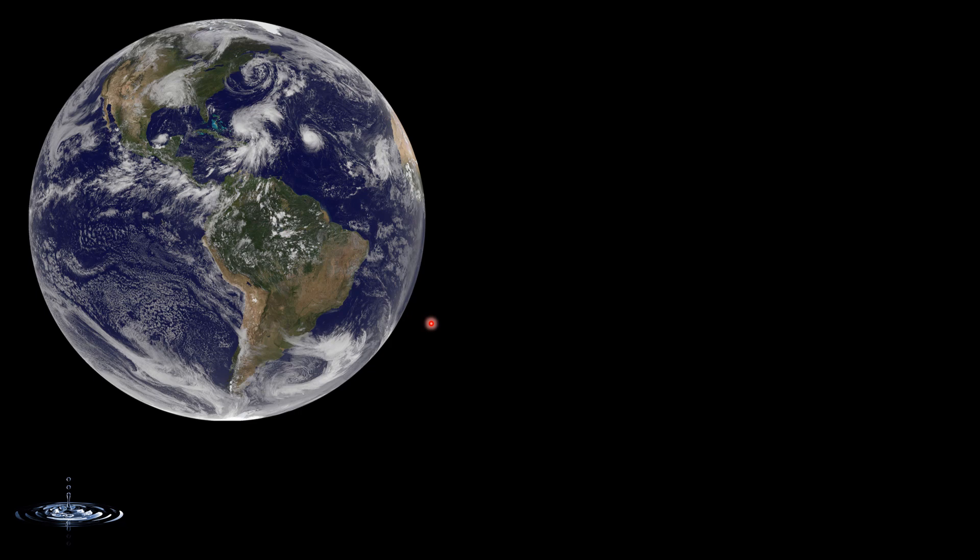It is true that the surface is mostly covered with water. Actually, 71% of the surface is covered with water, and this gives us a false impression that Earth is mostly made up of water. Now let's compare the volumes. The volume of Earth is about 1 trillion cubic kilometers, whereas the volume of water is 1.4 billion cubic kilometers.